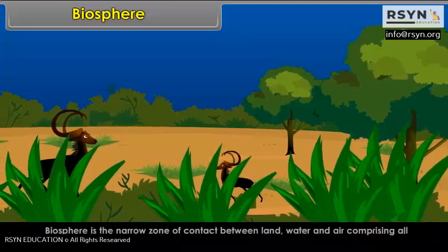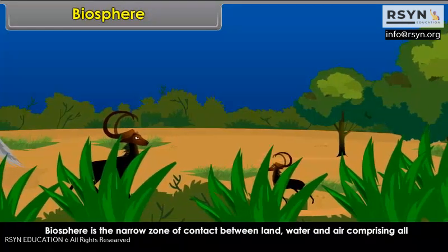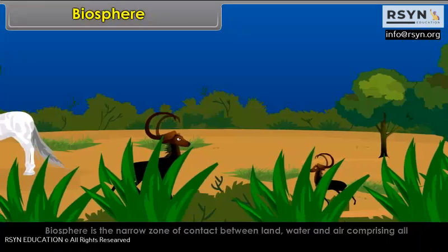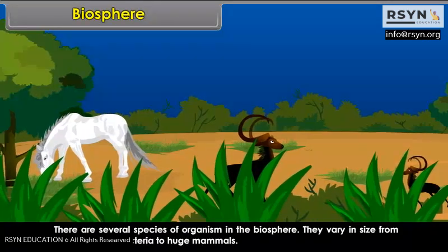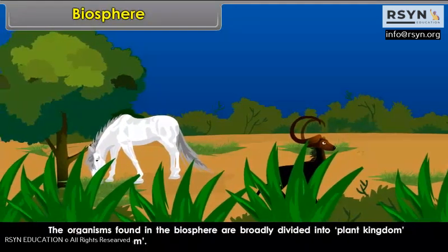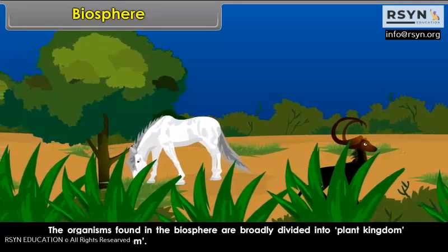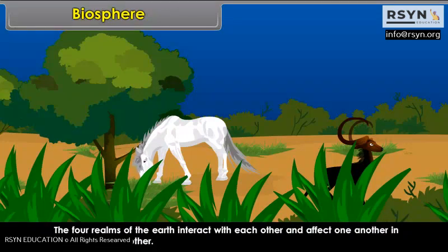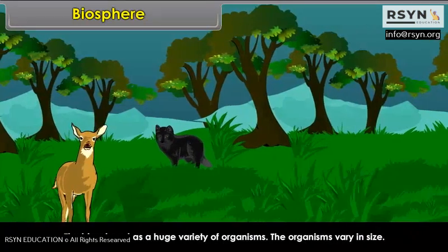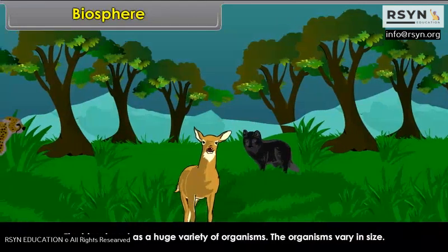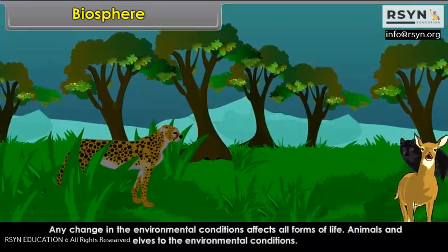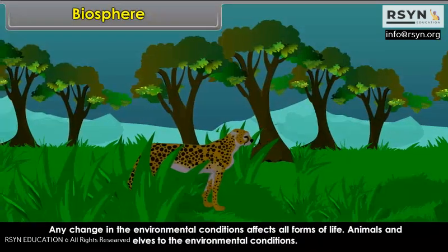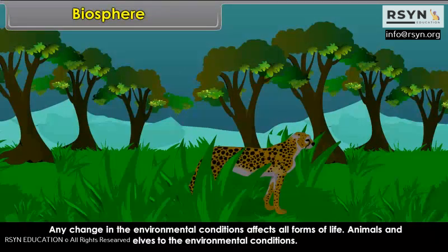The Biosphere is the narrow zone of contact between land, water and air, comprising all forms of life. There are several species of organisms in the biosphere. They vary in size from microbes and bacteria to huge mammals. The organisms found in the biosphere are broadly divided into plant kingdom and animal kingdom. The four realms of the earth interact with each other. The biosphere has a huge variety of organisms varying in size, from the smallest grass to the tallest tree. Any change in environmental conditions affects all forms of life.